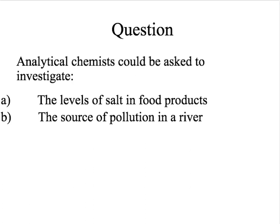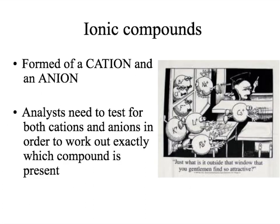Most analytical chemistry takes place in order to test different ionic compounds, meaning identifying the different ions that are present. All ionic compounds are formed of both a cation and an anion. The cation is the positively charged ion, for example the metal ion, and the anion is the negatively charged ion, for example the halogens. In industry, chemists need to test for both cations and anions to work out exactly which compound is present. This is specifically important as many chemicals appear clear, and in order to distinguish between them, we need to be able to test for their components.